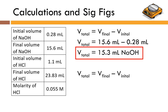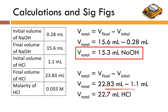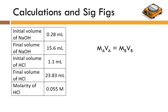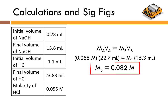Pause the video and try it for hydrochloric acid. Plugging in the numbers, we have two places after the decimal point and one place after the decimal point, so the final answer can only have one decimal place — giving 22.7 mL of hydrochloric acid. Next, we find the molarity of the sodium hydroxide solution using the formula. The setup has all multiplication and division, so we count sig figs: 0.055 has two sig figs, and each volume measurement has three sig figs. We go with the smaller number — two sig figs — so the final answer can only have two significant figures.